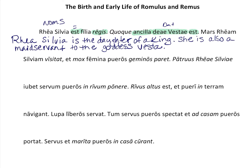Mars is exactly as it is in English. 'Visitat,' if you look it up in the glossary, means 'visits.' Then we have the accusative ending — so who does he visit? Mars visits Rhea Silvia. 'Et' means 'and,' and 'mox' is an adverb that means 'soon.' You can place it anywhere that makes sense.